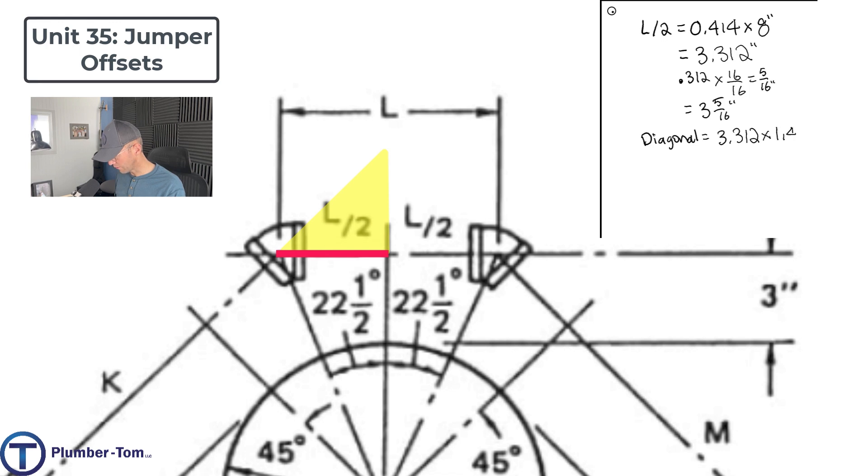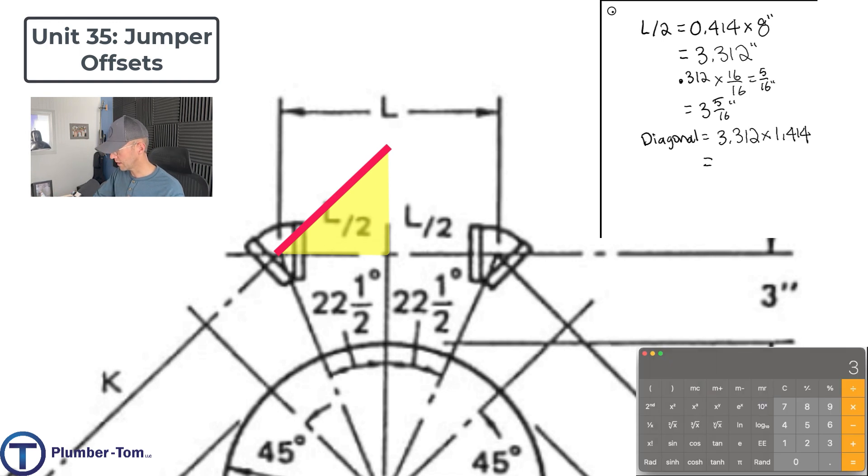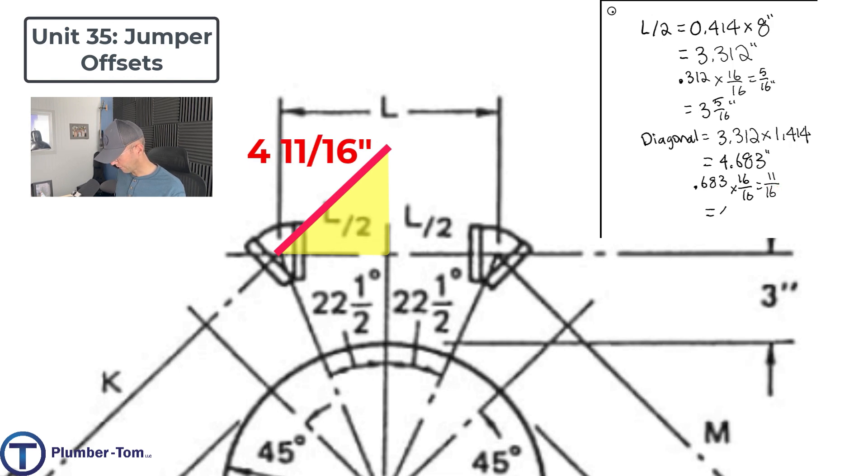We can times that by 1.414. That's going to give us a diagonal that comes up across the top. As we do the math on that, we've got 3.312 times 1.414. We're going to get 4.683. We could take it one step farther. Let's figure out what .683 is. We'll multiply that by 16 over 16. .683 times 16 equals 10.9. Basically 11. Let's round to 11. 11 sixteenths. So that would also equal 4 and 11 sixteenths. Now that's going to be useful for us as we start into solving.